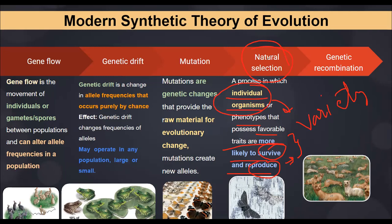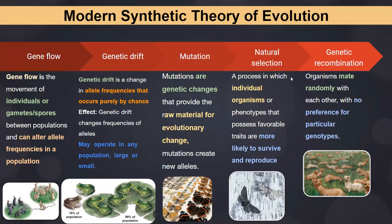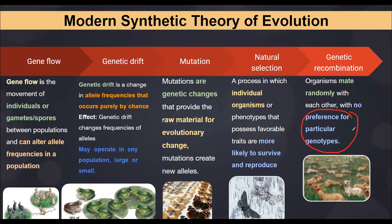Finally, genetic recombination occurs because of sexual reproduction and mating. Organisms mate with each other and carry out sexual reproduction with no preference for particular genotypes — this happens naturally. Different types of genotypes come up naturally, and individuals with different traits lead to variety in siblings, which finally leads to evolution. These are the factors that contribute to variation leading to evolution, as explained under the Modern Synthetic Theory of evolution. At this point we consider these factors rather than ancient ones like special creation or chemical evolution.